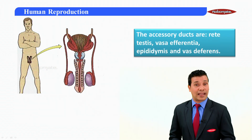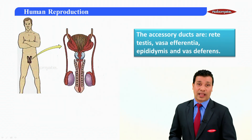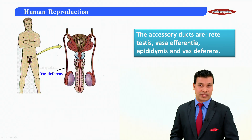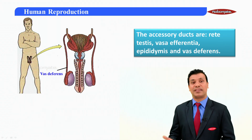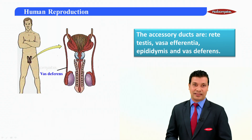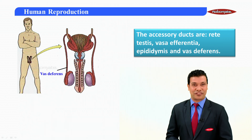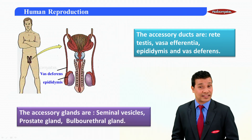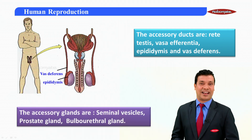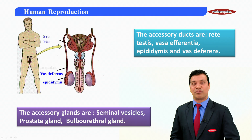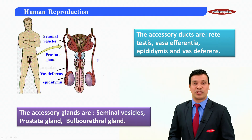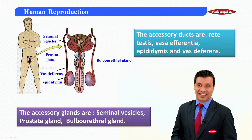The accessory ducts are the rete testis, the vasa efferentia, the epididymis, and the vas deferens. The accessory glands are the seminal vesicles, the prostate gland, as well as the bulbo-urethral gland.